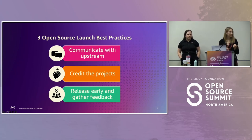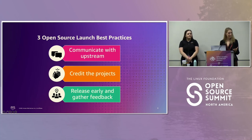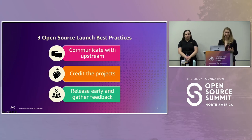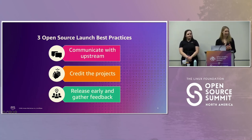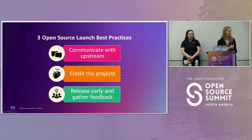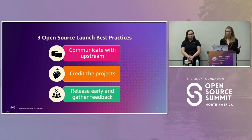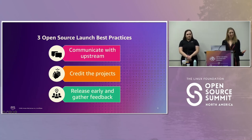The second thing we did was credit the projects in the launch — making sure we're not taking credit for the work they'd already done in helping us build our product. The third thing Phil and his team did was release the project early and gather feedback from the community. This creates a more open development process and shows the community we're open to feedback, that we want to work with them, and there's room for contribution.